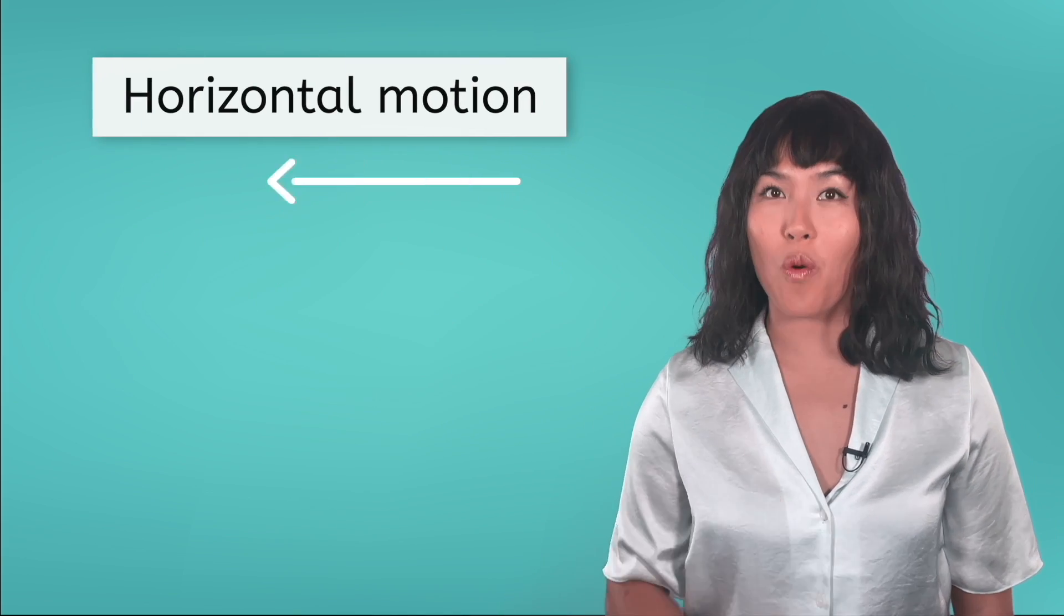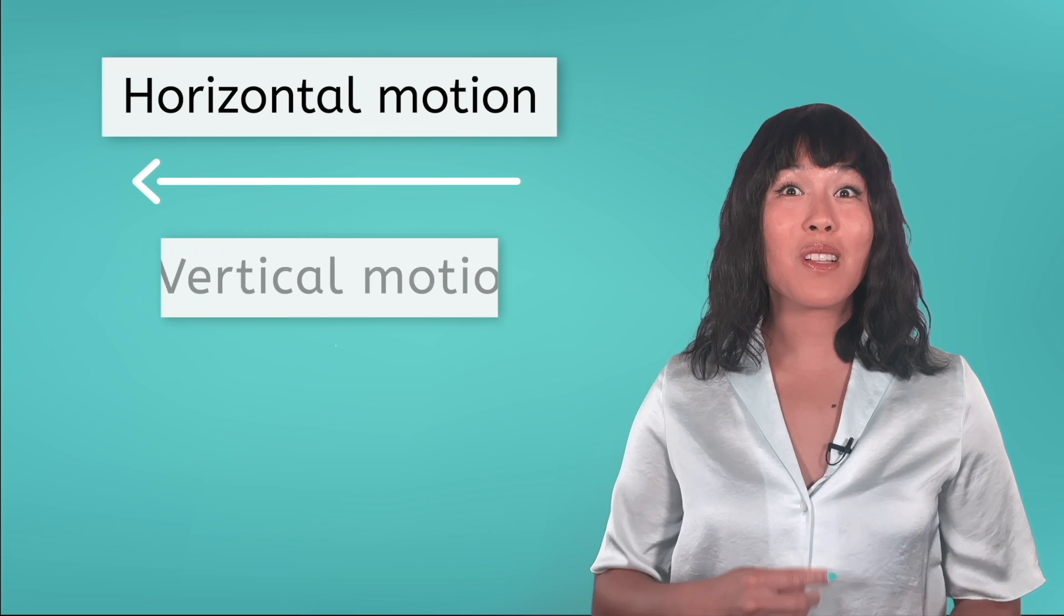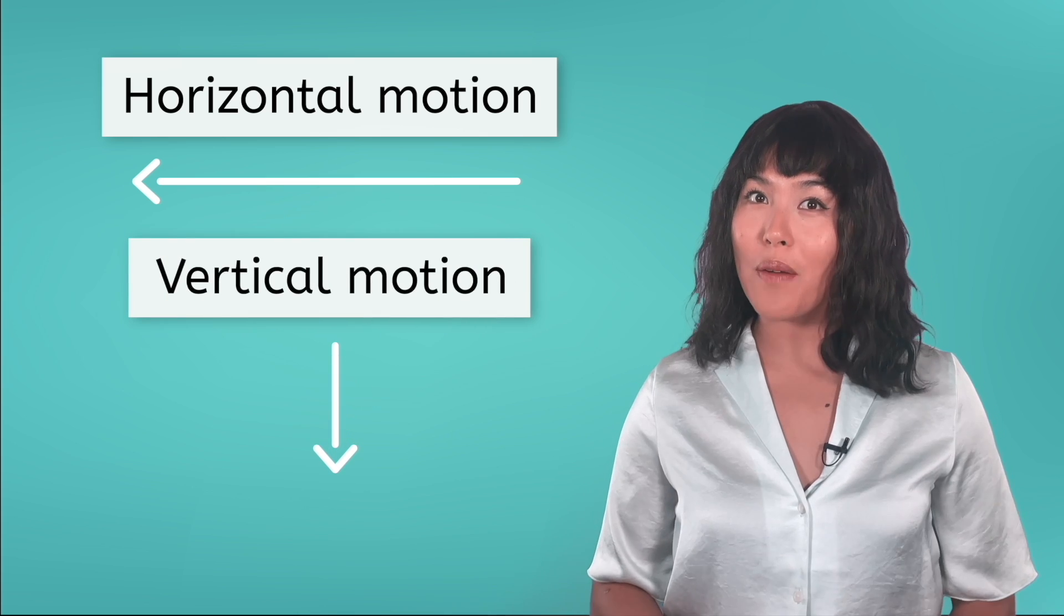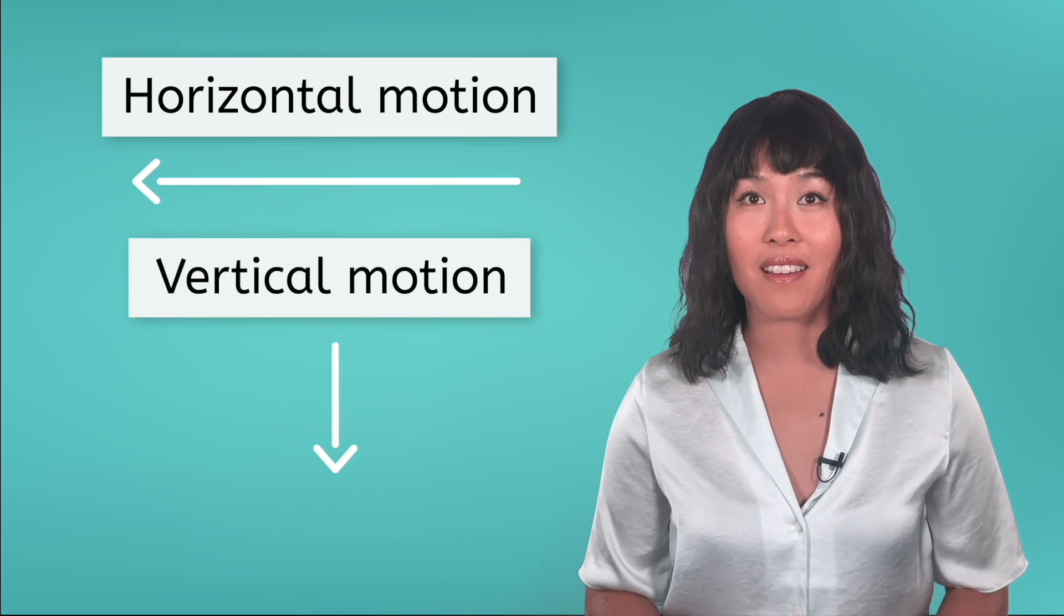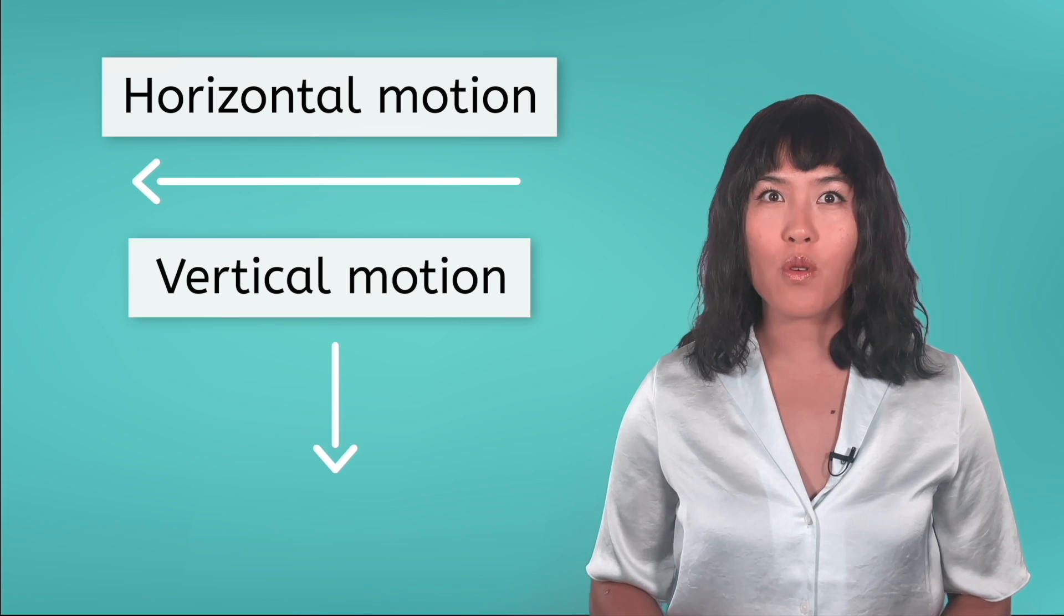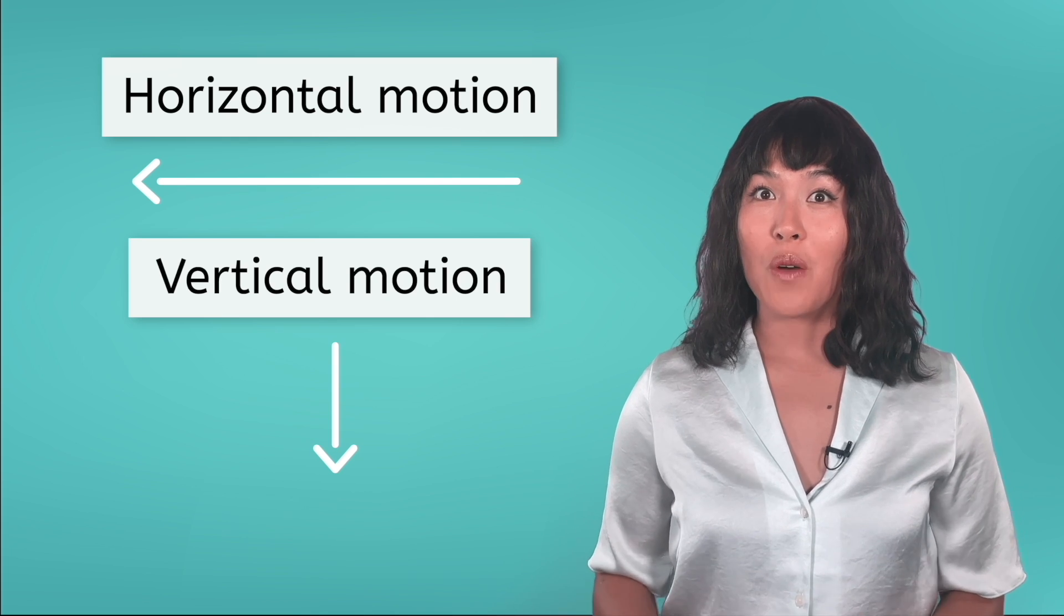Well, it definitely had horizontal motion, but it also still had vertical motion and dropped to the ground a few feet away. I only put a horizontal force on it, so what's going on here?